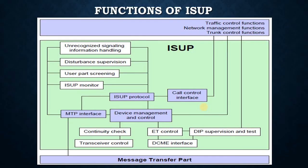Functions of ISUP. ISUP can be seen as a number of functional parts, some of which are mandatory and some optional. These parts act as building blocks. During source system design or market adaptation, only some of the parts may require modification; the rest are reused. The following ISUP functional parts are mandatory: ISUP protocol, call control interface, MTP interface, and device management and control. There are also optional parts: user part screening, disturbance supervision and recording, unrecognized signaling information handling, and ISUP monitor.